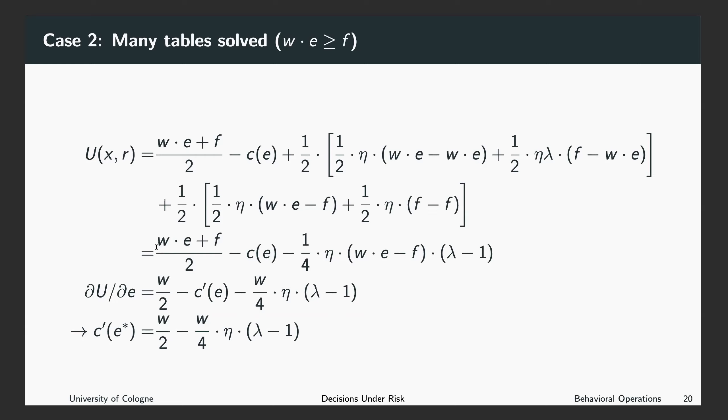Now we can again simplify the expression. It looks similar to the expression we had on the slide before. And again, we will look at the first order condition. We first take the derivative of the utility with respect to the number of tables solved, and we end up with this derivative. Setting this derivative equal to zero, we get the first order condition, and we can rearrange this expression to get here.